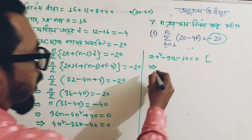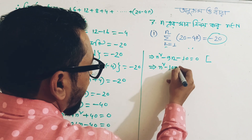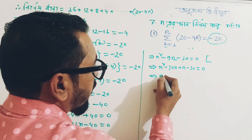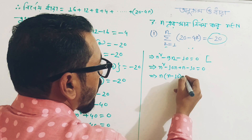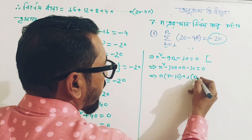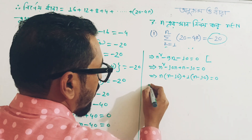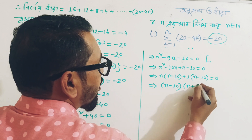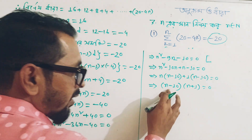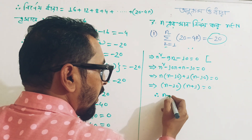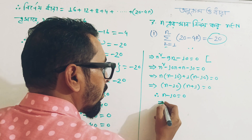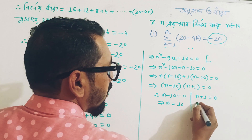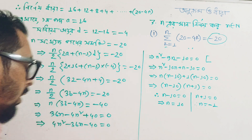So we write n squared minus 10n plus n minus 10 equals 0. Then n is common: n(n minus 10) plus 1(n minus 10) equals 0. So we write n minus 10 into n plus 1 equals 0. Therefore n minus 10 equals 0, giving n equals 10; and n plus 1 equals 0, giving n equals minus 1.